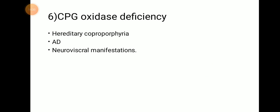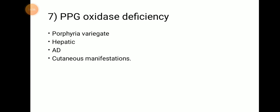CPG3 by CPG oxidase forms protoporphyrinogen 3. CPG oxidase deficiency leads to hereditary coproporphyria, which shows autosomal dominant inheritance and neurovisceral manifestations. The next step: PPG oxidase converts protoporphyrinogen into protoporphyrin. PPG oxidase deficiency leads to porphyria variegata — this is the hepatic type, autosomal dominant inheritance, and it shows cutaneous manifestations.